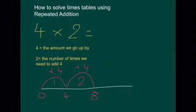Okay, so you can see that we have added on four. And we have done that one, two times. And we have got an answer of eight. So, we know that four times two will give us eight.